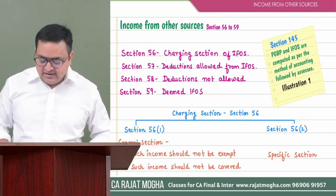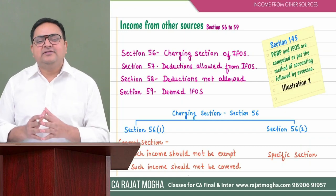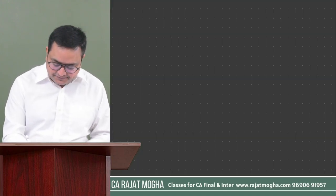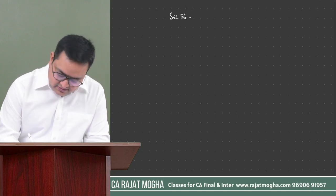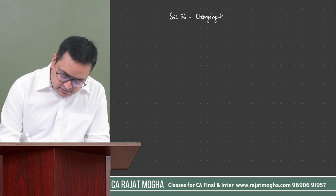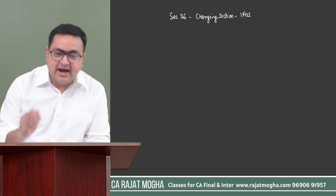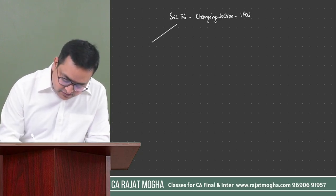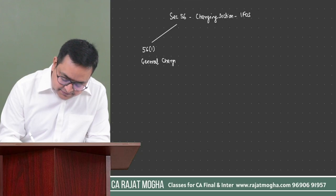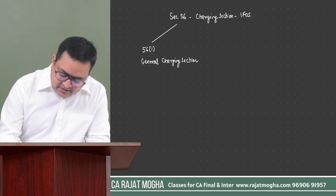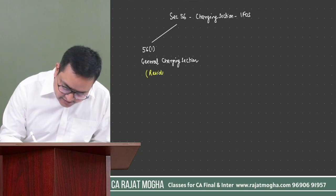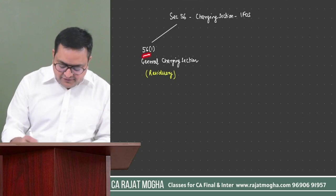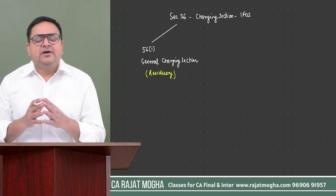So first we will revise Section 56. Section 56 is a general charging section — it is the charging section of IFOS. It is general in nature. I can also say it is residuary in nature. Section 56(1) says that if there is any income of the assessee, we first check it against those four heads.